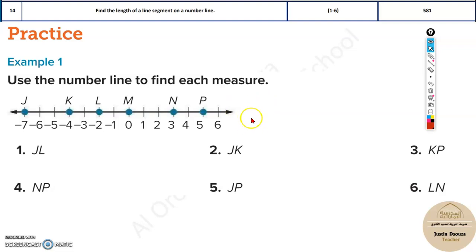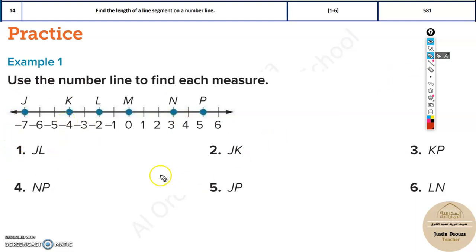Another easy topic here: how to find the length of line segments on a number line. The number line will be given to you in the question, and they will give you coordinates to find — say for example the point J and L. Now there are many ways to do it; one would be just counting it out: one, two, three, four, five.